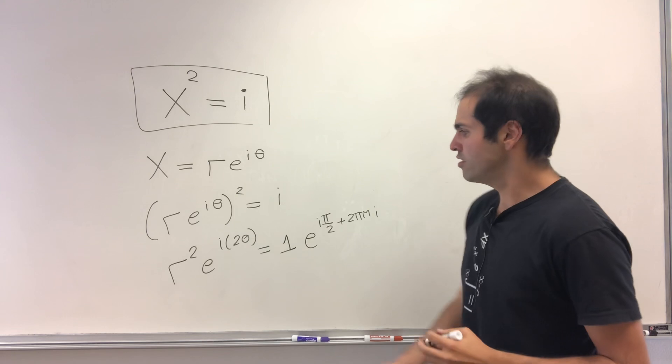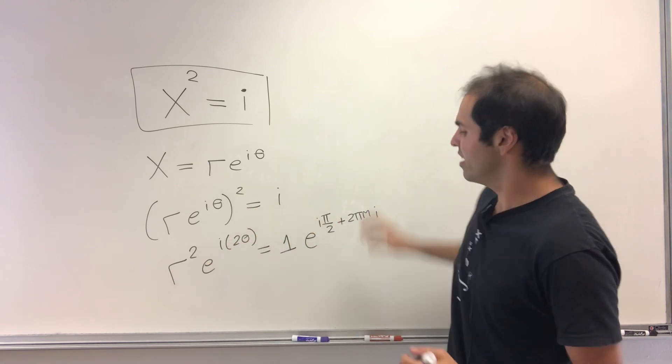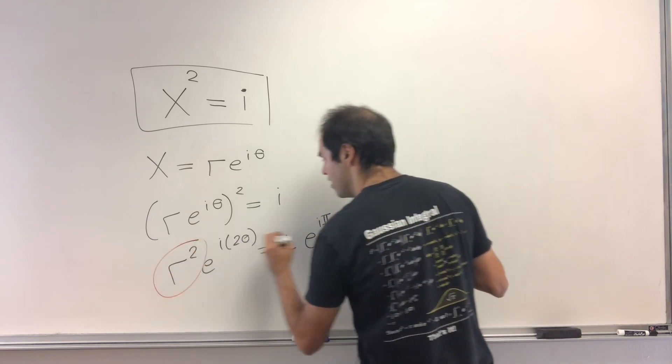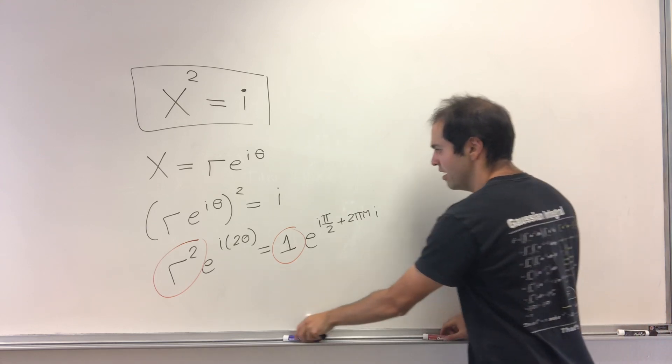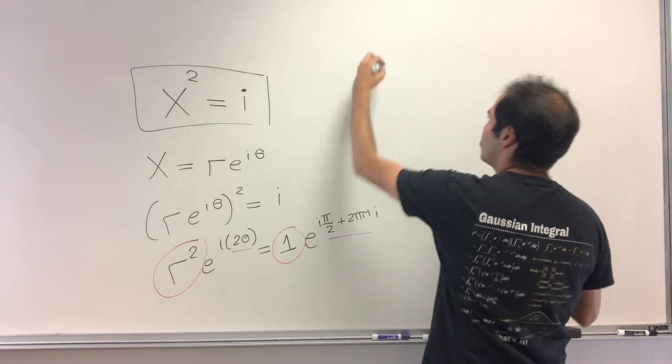Now here's the thing. This is of the form something times e^(i·something), and this is also something times e^(i·something). So it's enough to compare the radii with the angles. What we're left with is simply, first of all, r² equals 1.